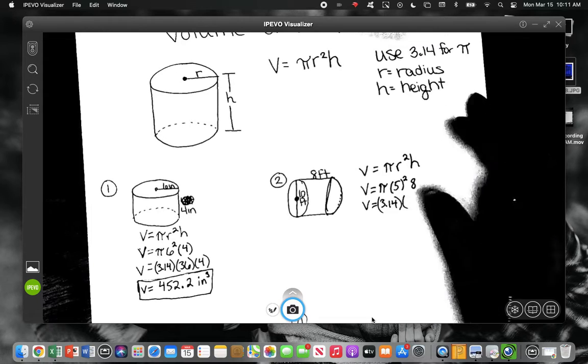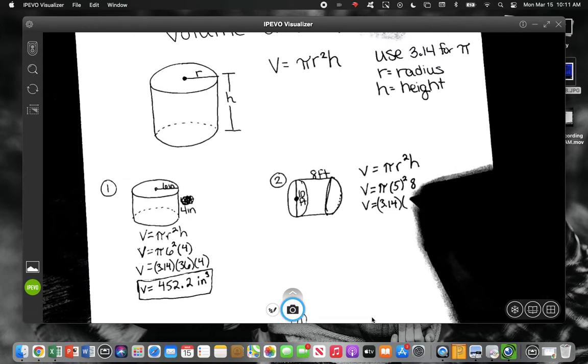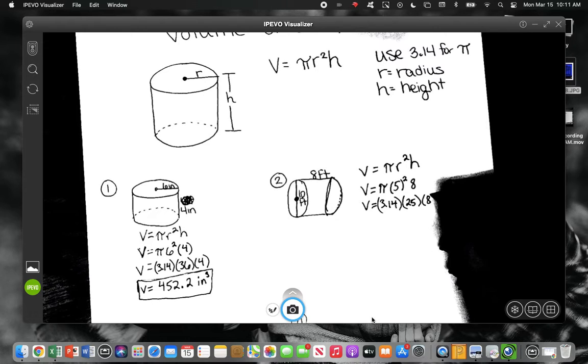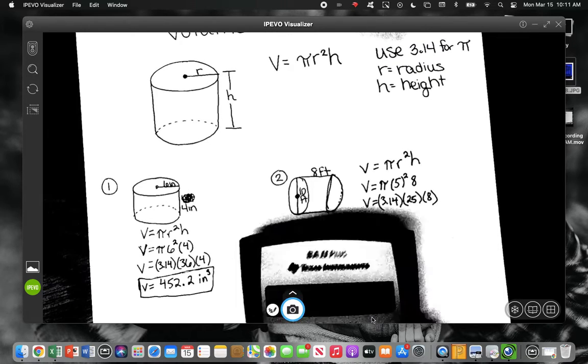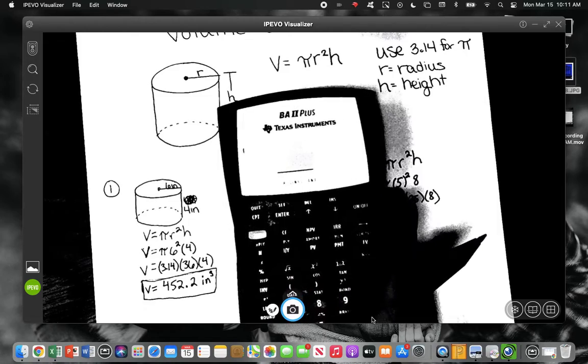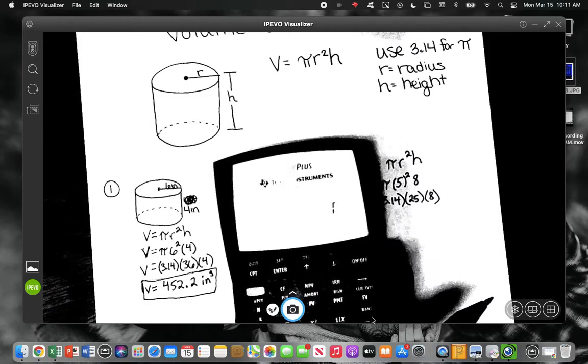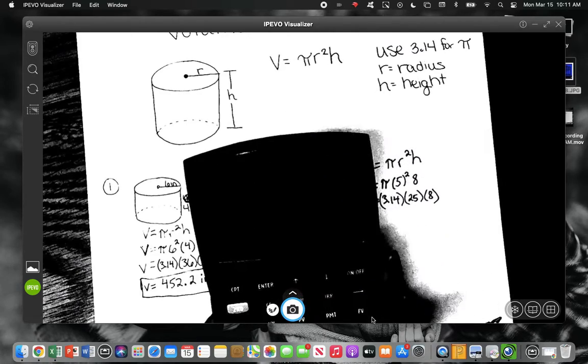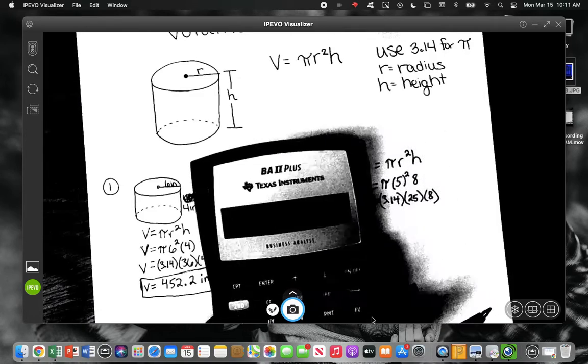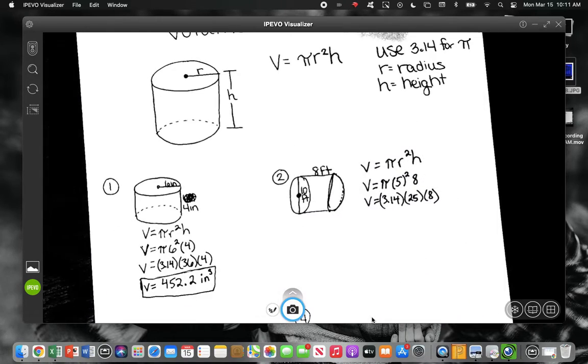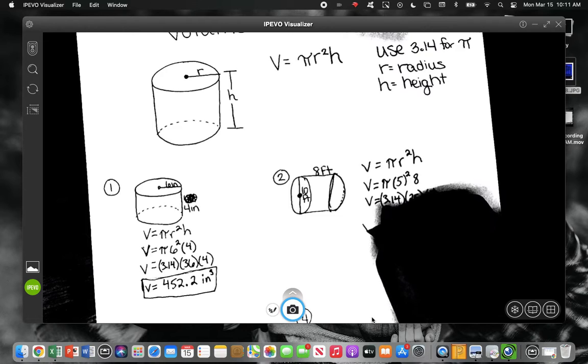Alright, so what is 5 squared? 25. So I don't think we can see my calculator up here. Yeah, the light's right above. Alright, so punch 3.14 times 25 times 8. 628? Is that what everybody else got? Yeah. Alright.